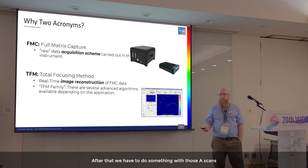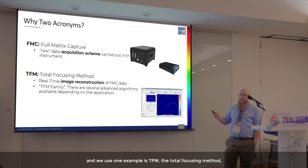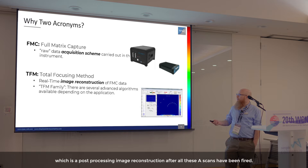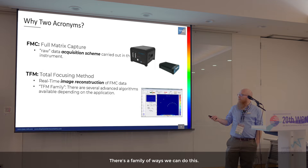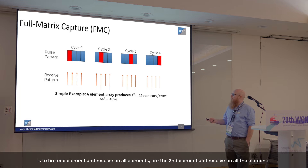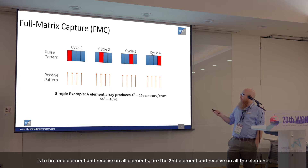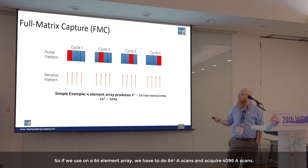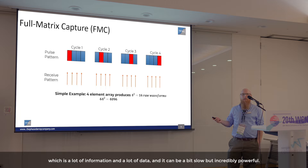After acquiring all those A-scans, we have to do something with them. One example is TFM — the total focusing method — which is a post-processing image reconstruction after all these A-scans have been fired. The acquisition scheme for FMC fires one element and receives on all elements, cycling through all elements individually. On a 64-element array, that means 64 squared — 4,096 A-scans — a lot of data, but incredibly powerful.